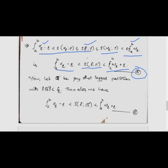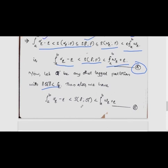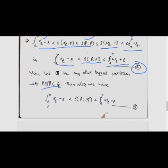Now let Q̊ be any other tagged partition with ||Q̊|| < δ(ε). By the same argument, we obtain: ∫_a^b α_ε − ε < S(f, Q̊) < ∫_a^b ω_ε + ε. We mark this as inequality B.